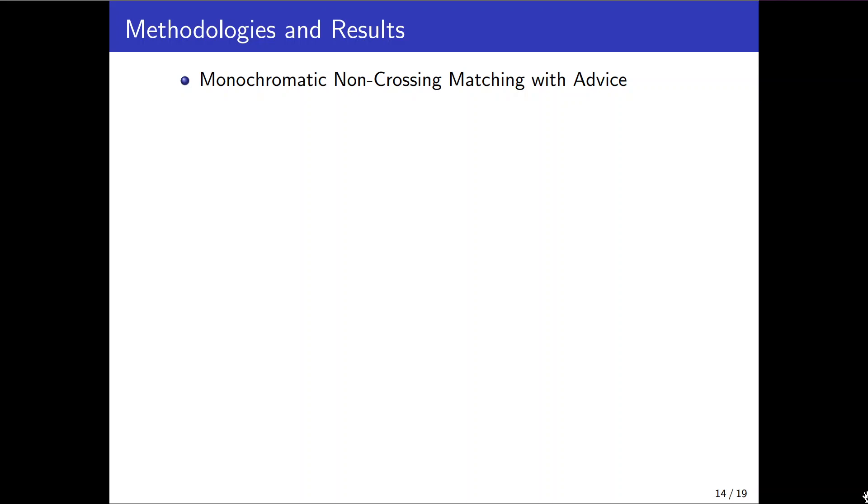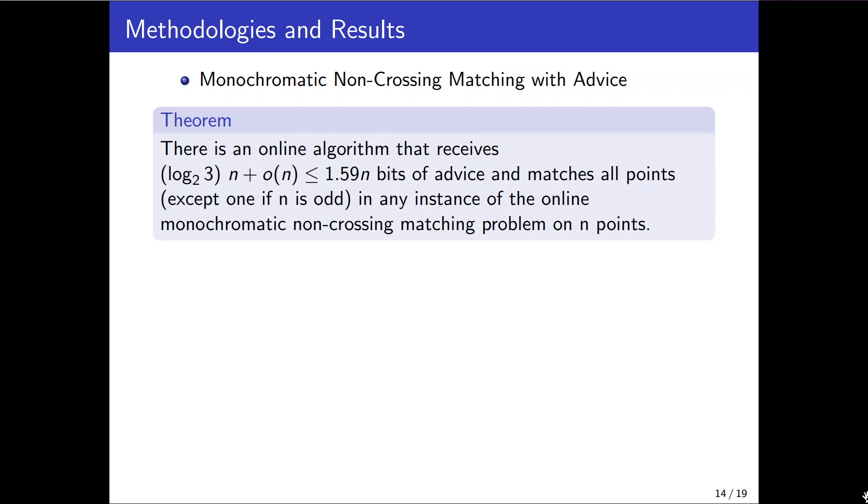In monochromatic case under the advice setting we showed a linear number of bits of advice is sufficient. In order to prove assume an offline packing where points ordered by their x coordinate and consecutive points are matched. For each point x the advice is either 0, 1, or 2 which are represented by brackets in the picture. 0 indicates if the partner of x comes later.